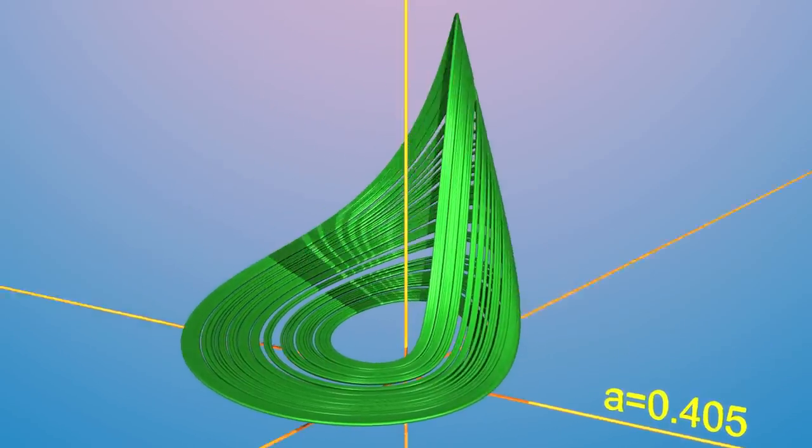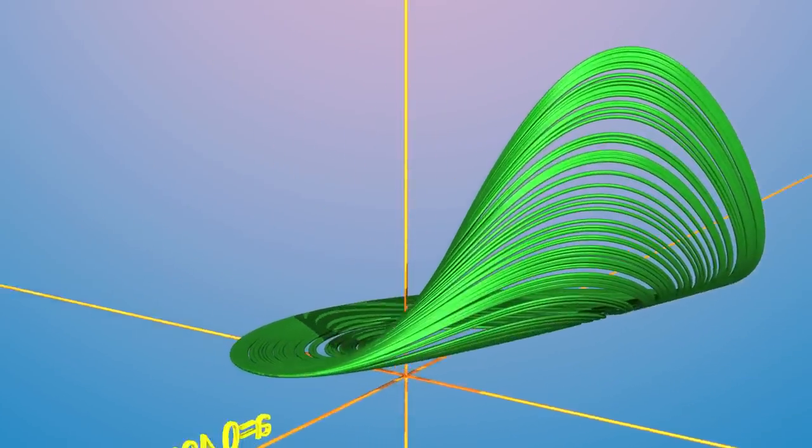For A equal to 0.405, the attractor is complicated and chaotic.